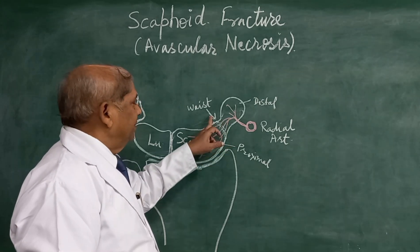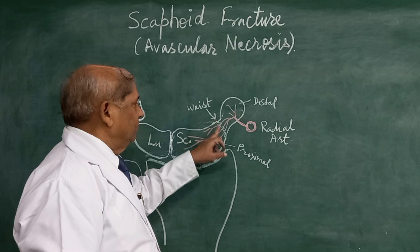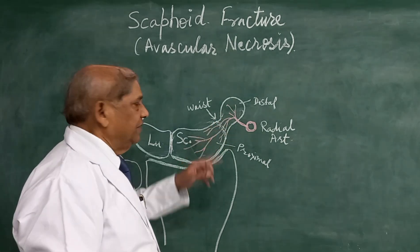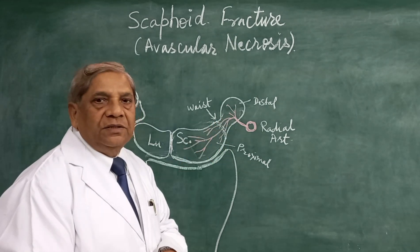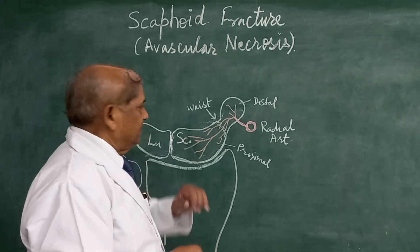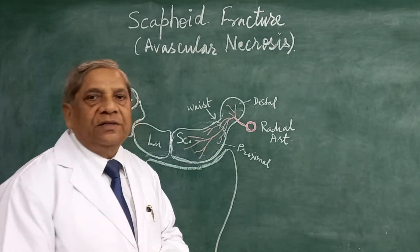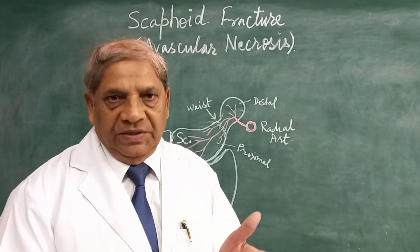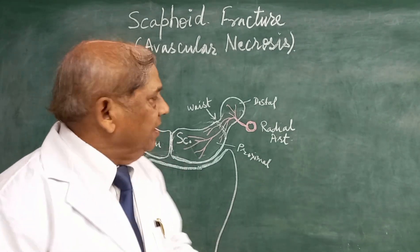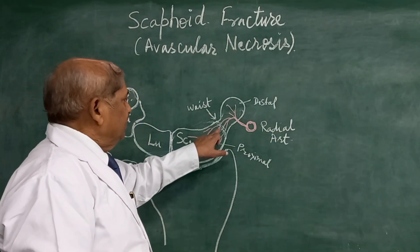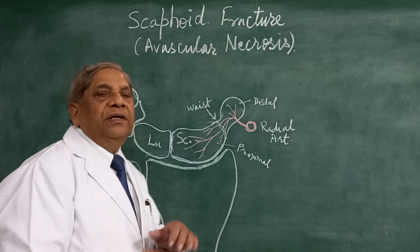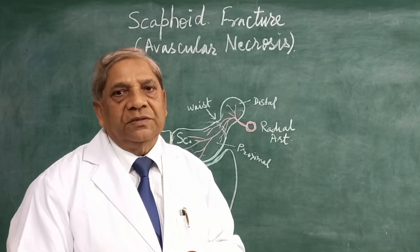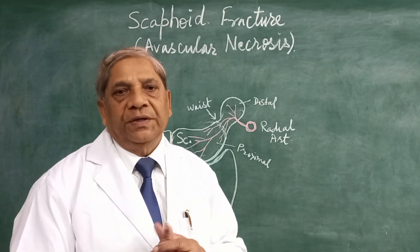While running towards the proximal part, these vessels have to pass through the waist — the narrowest part between the proximal and distal portions. So during a fracture, some of the vessels may get ruptured and some may remain intact during an incomplete fracture. As a result, the fracture heals very slowly because the blood supply is interfered with.